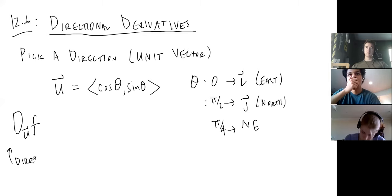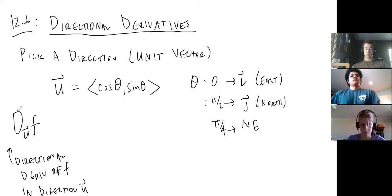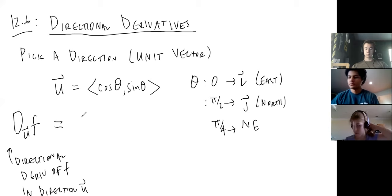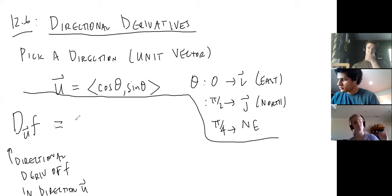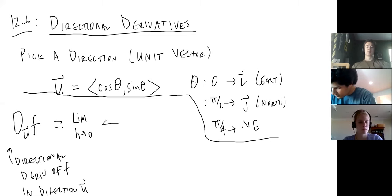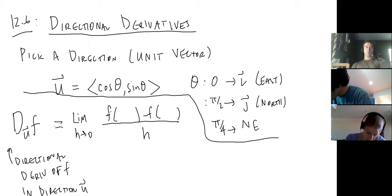We want to talk about the directional derivative in the direction of u. To derive it — no proof Friday — we do the exact same thing as the regular derivative: take the limit as h goes to zero, making the fraction with f of something minus something, divided by h.